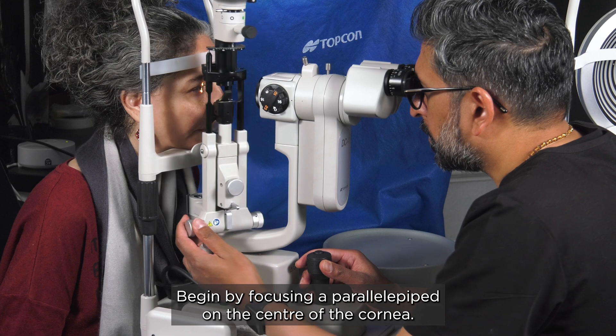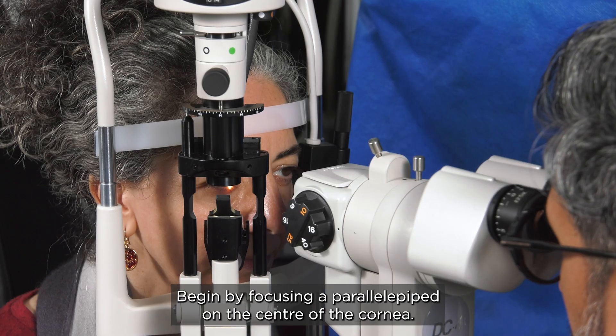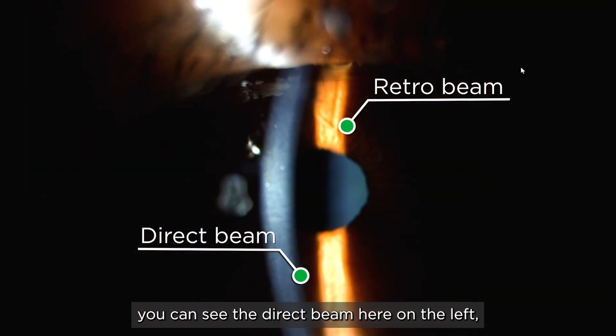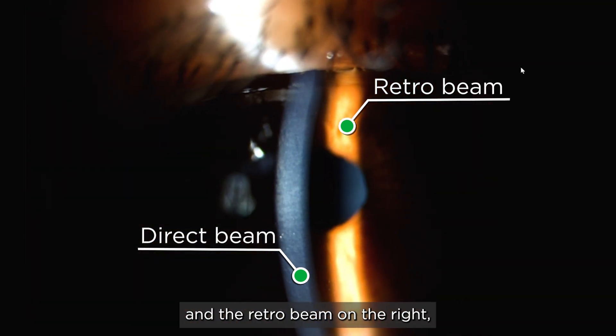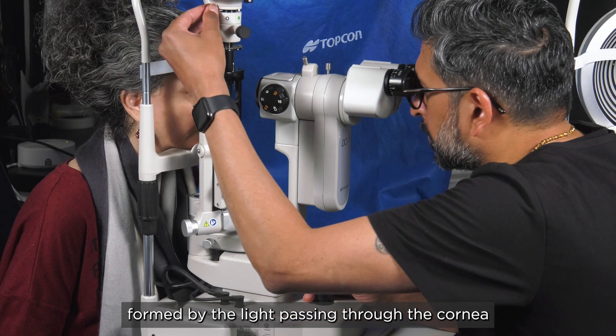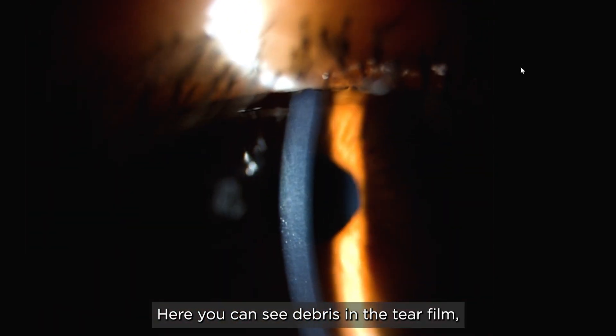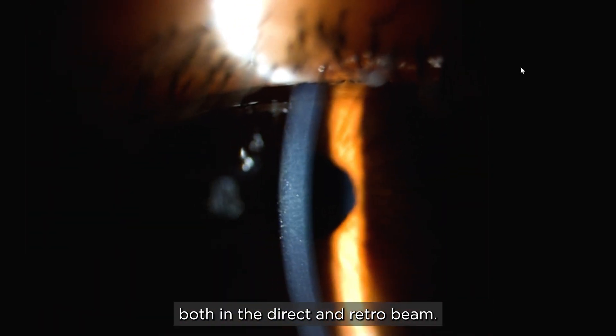Begin by focusing a parallel pipe on the centre of the cornea. With the illumination coming from the left you can see the direct beam here on the left and the retro beam on the right formed by the light passing through the cornea and being reflected back from the iris. Here you can see debris in the tear film both in the direct and retro beams.